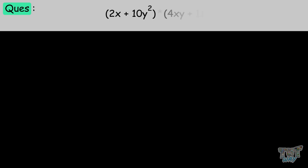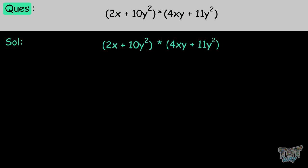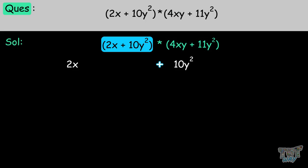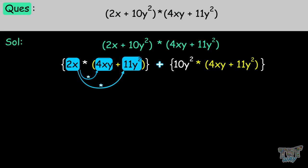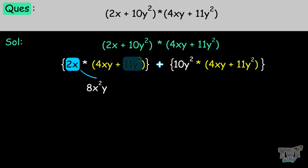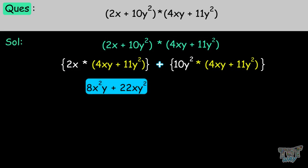Next question: (2X plus 10Y squared) times (4XY plus 11Y squared). We are multiplying two binomials. We separate the first binomial — 2X plus 10Y squared — and multiply each term with the second binomial, 4XY plus 11Y squared. Starting with 2X: 2X times 4XY is 8X squared Y, and 2X times 11Y squared is 22XY squared. That is our first product.